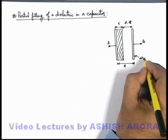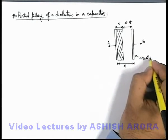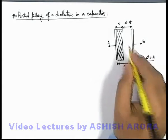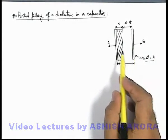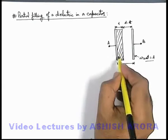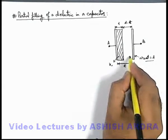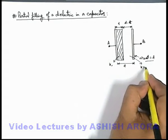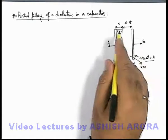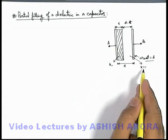If the area of the plates of the capacitor is A, then in this situation we can consider there are two dielectric slabs. One is with a dielectric constant k and the other is with a dielectric constant k equal to 1, because we know that the dielectric constant of free space is 1.